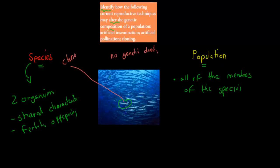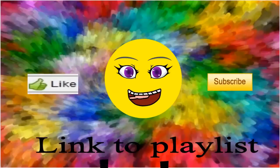By contrast, if those fish were siblings rather than clones, there'd still be quite a bit of genetic diversity because they'd have different chromosomes and alleles. To summarise: the more cloning and selection there is, the less genetic diversity; the more natural the process, the higher the genetic diversity. All three techniques — artificial insemination, artificial pollination, and cloning — decrease genetic diversity, with cloning having the greatest effect.